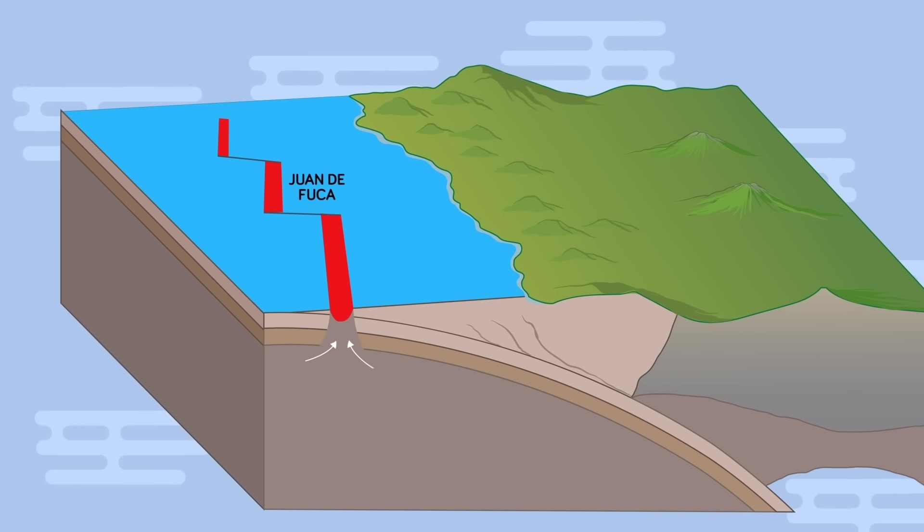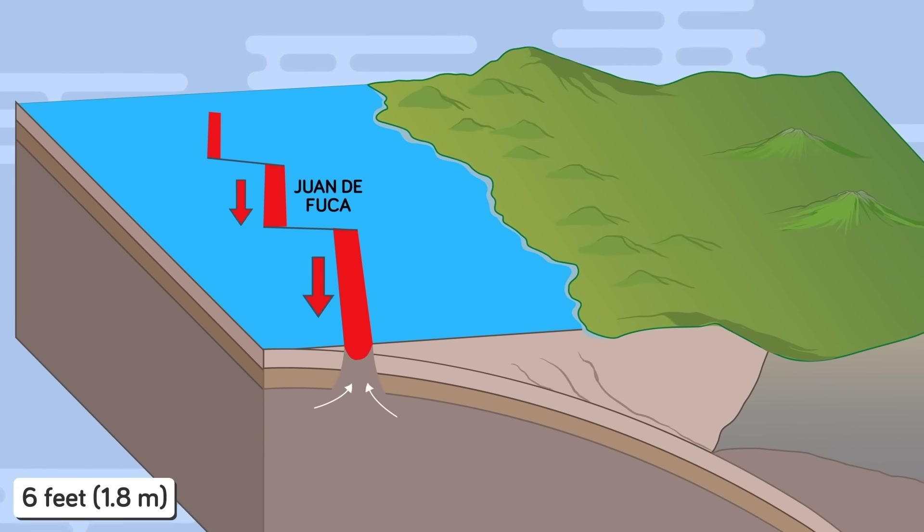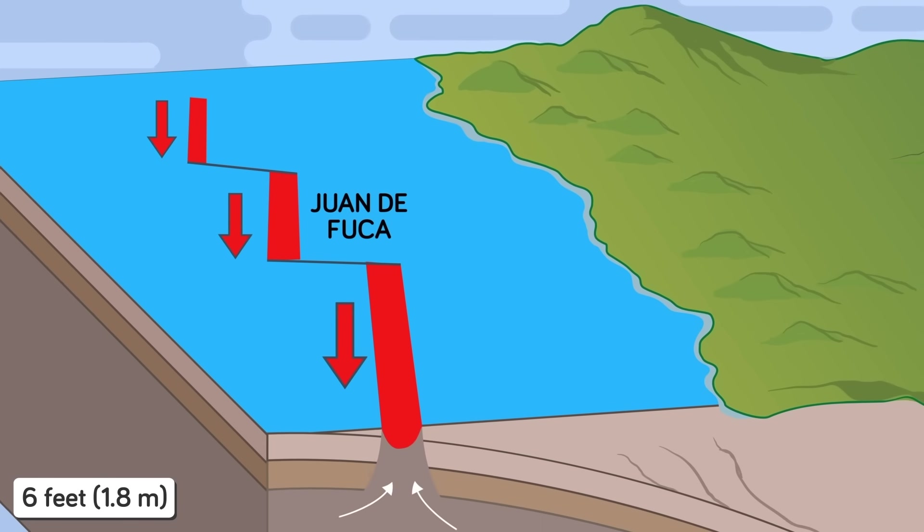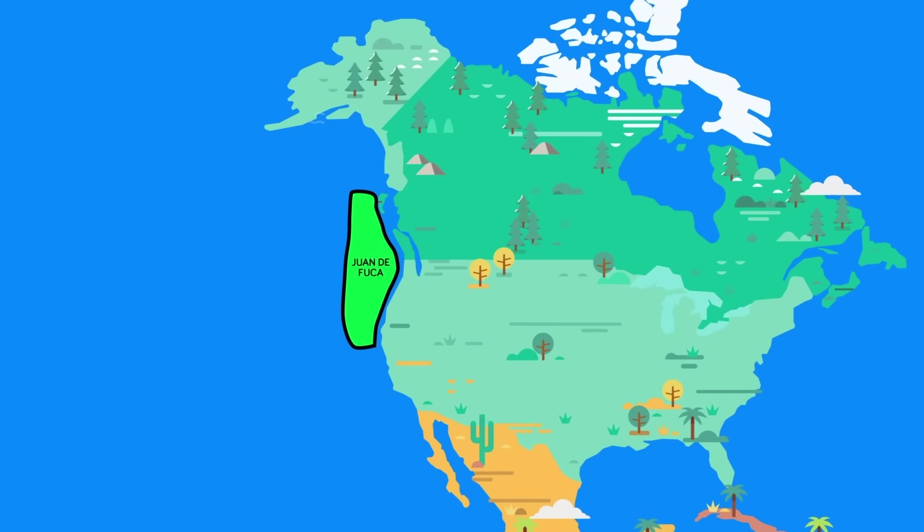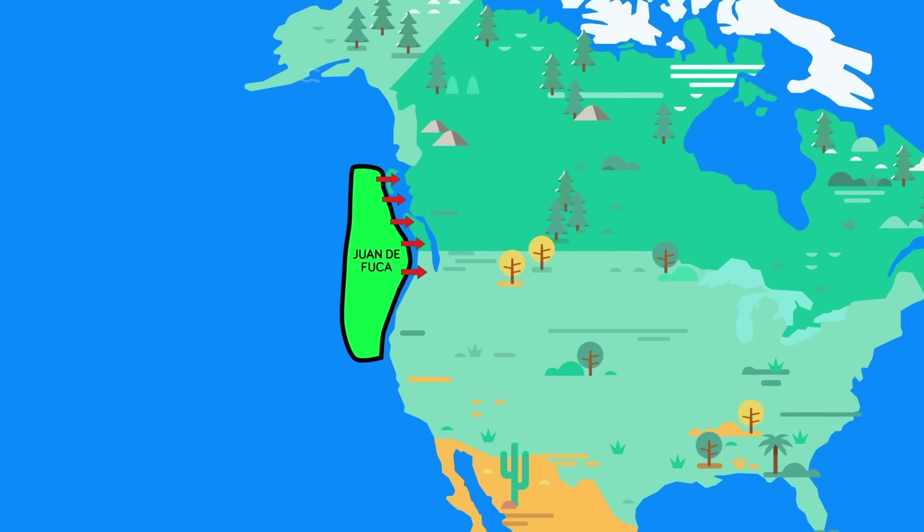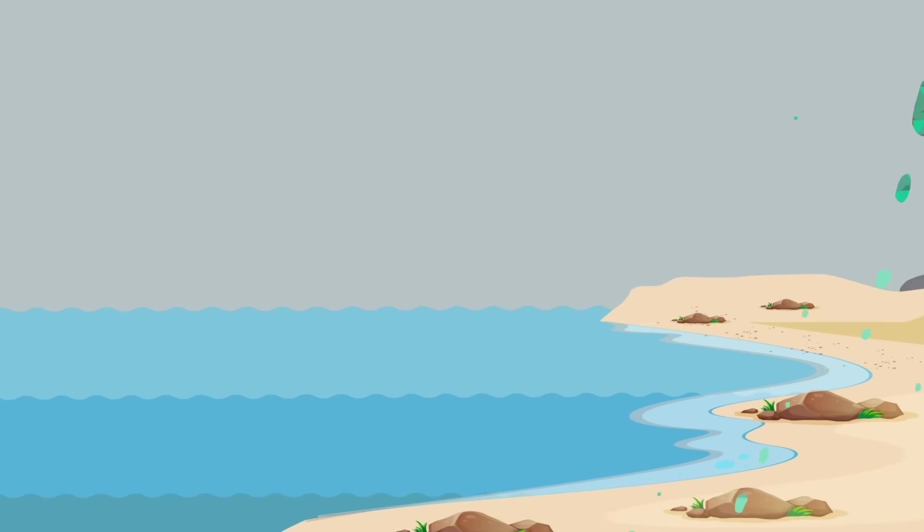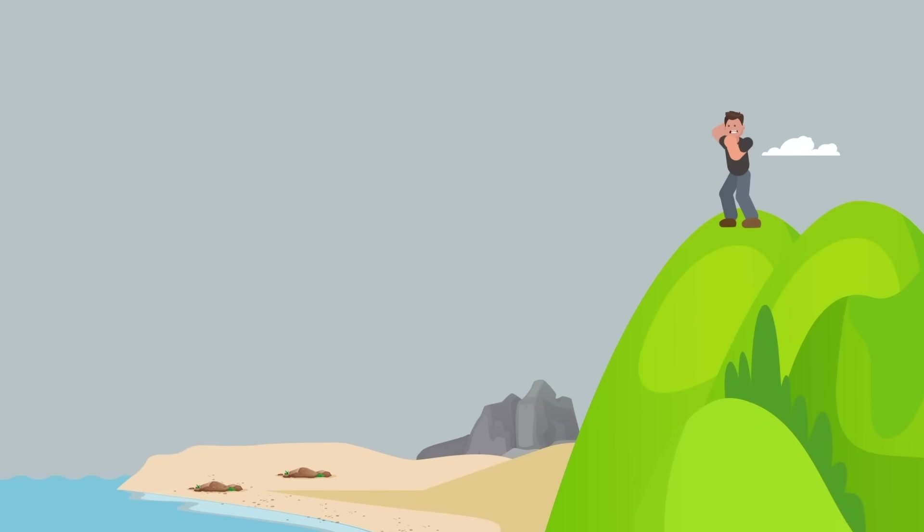When the Cascadia subduction zone causes an earthquake, the ground that makes up the Juan de Fuca could fall up to six feet under the North American tectonic plate. These six feet, when spread out over a big chunk of the Pacific coast, add up to a lot of water displaced at once. You finally climb up the hill you've been trying to reach and look out over the Pacific.